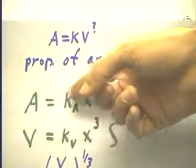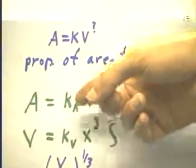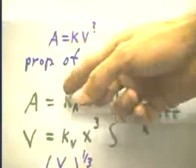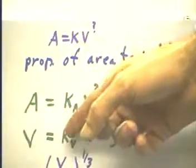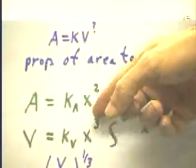So we're going to call that constant k_A, standing for the area constant. So area is going to be k_A times x squared, and volume will be a volume constant k_V times x cubed.